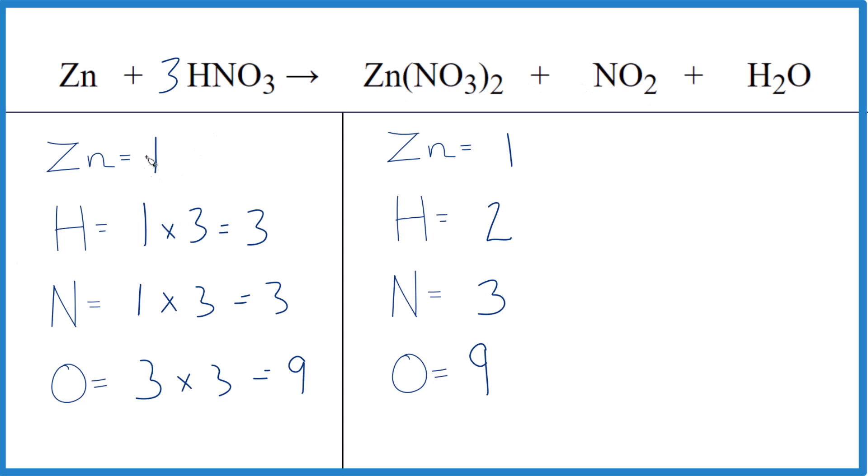I started out, I counted all the atoms up carefully, and then I thought, well, I'll put a 3 here because that solves most everything. That gives me 3 nitrogens, 9 oxygens. Zinc is just 1 still. But right here, this is a problem. 3 hydrogens and 2 hydrogens. This does not work. So I'm going to forget about that, and let's try another way.